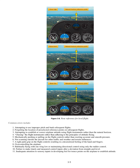Common errors include: 1. Attempting to use improper pitch and bank references. 2. Forgetting the location of pre-selected reference points on subsequent flights. 3. Attempting to establish or correct airplane attitude using flight instruments rather than the natural horizon. 4. Chasing the flight instruments rather than adhering to the principles of attitude flying. 5. Mechanically pushing or pulling on the flight controls rather than exerting accurate and smooth pressure. 6. Not scanning outside the aircraft for other traffic and weather and terrain influences. 7. A tight palm grip on the flight controls resulting in a desensitized feeling. 8. Over-controlling the airplane. 9. Habitually flying with one wing low or maintaining directional control using only the rudder. 10. Failure to make timely and measured control inputs after a deviation. 11. Inadequate attention to sensory inputs and developing feel for reference points on the airplane.